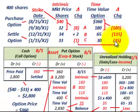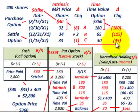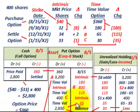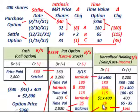Looking at the time value portion, it reduced from $65 down to $30, so we have a negative change of $35. That time value portion would reduce the put option account by $35, and then that would be an unrealized holding loss of $35.